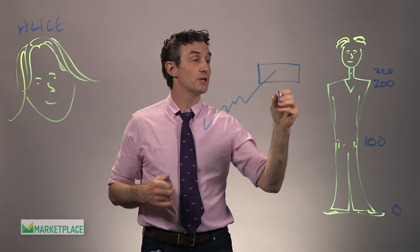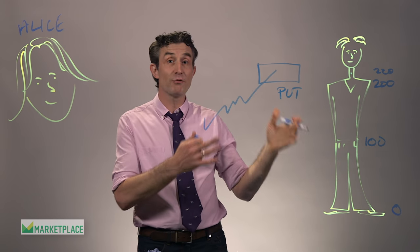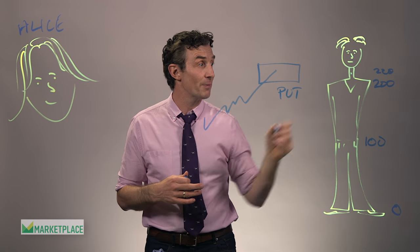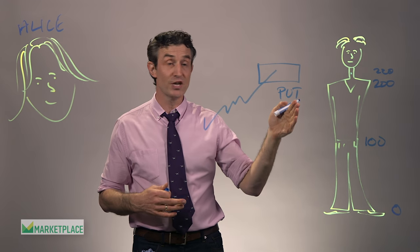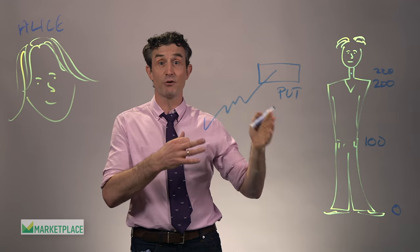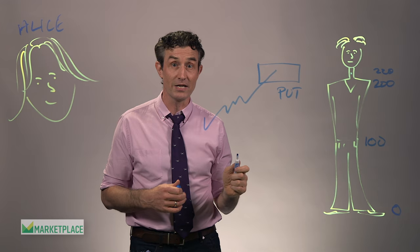Now, the collar comes in two parts. The first part is called a put. And that's when she has made an arrangement so that if the stock falls below a certain level, in this case, shoulder level or two hundred dollars, another investor will step in and buy the shares from her for two hundred dollars a share. So she's basically protected her entire investment. This is called an option. So she has the option to sell those shares at this price.